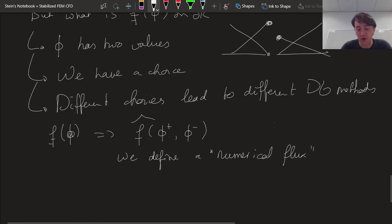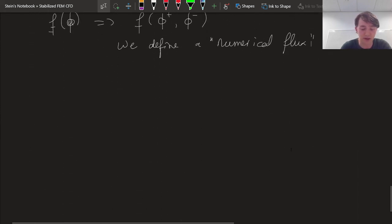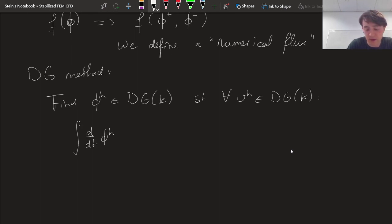With this choice of flux, and we have different options, we can finally obtain our discontinuous Galerkin method by discretizing our space on each element and choosing, substituting this numerical flux. So then we get the DG method. Find phi_h in our DG space on each element, such that for all test functions, we have the integral of the time derivative of phi_h times v_h minus